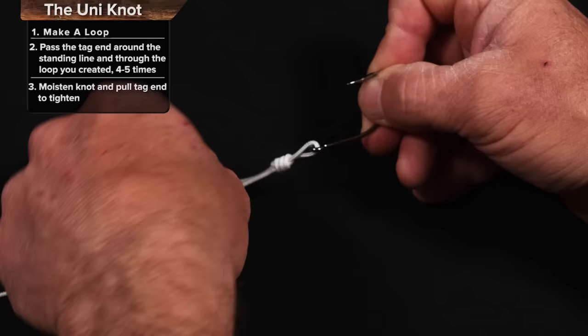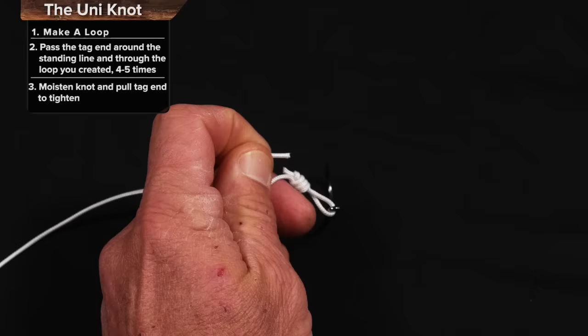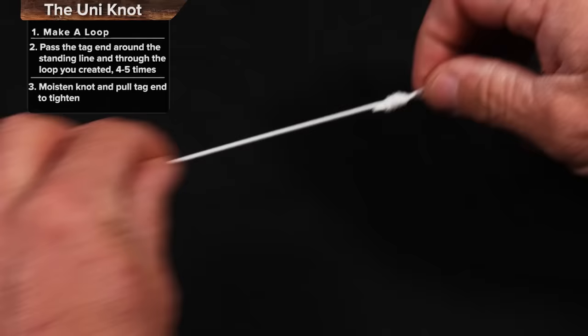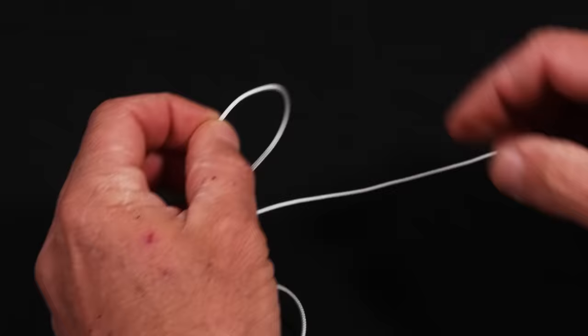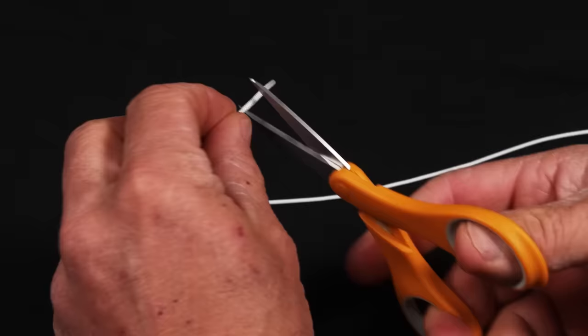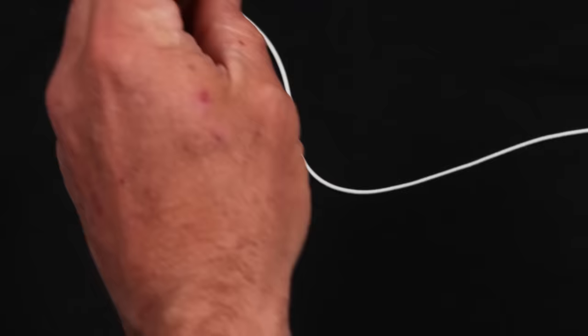You can also use a Uni, one of the strongest knots from leader to braid, from leader to monofilament, from monofilament to monofilament, any type of line connection. A very strong connection here is what's called a double Uni knot.